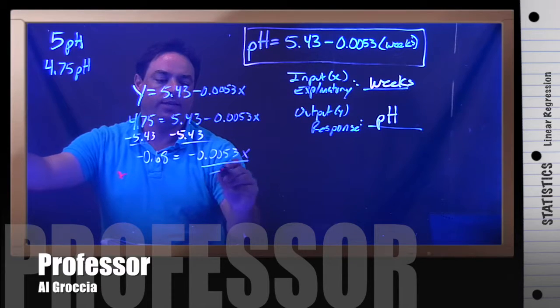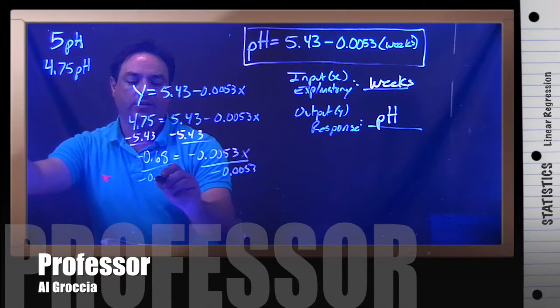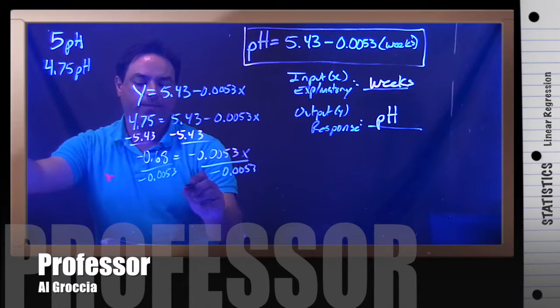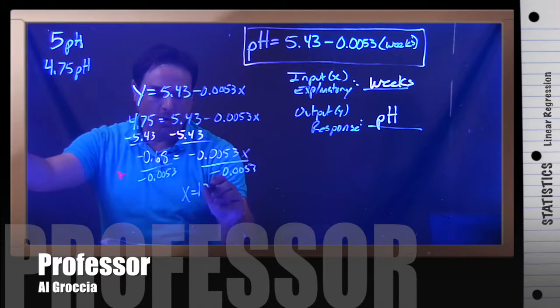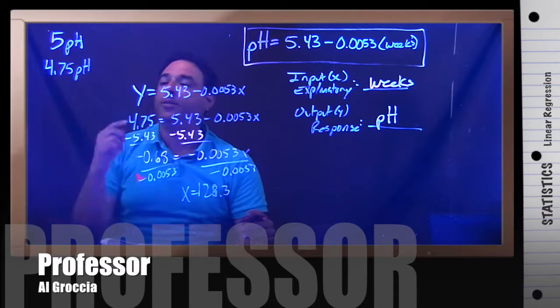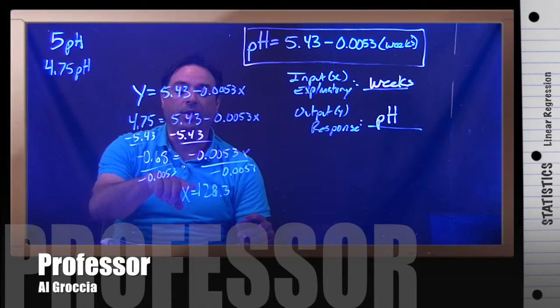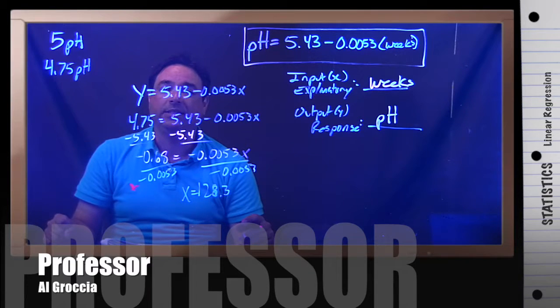Then we will divide by negative 0.0053, which gives us x equals 128.3. So the pH will reach 4.75 at a predicted or estimated value of 128.3 weeks. Thank you.